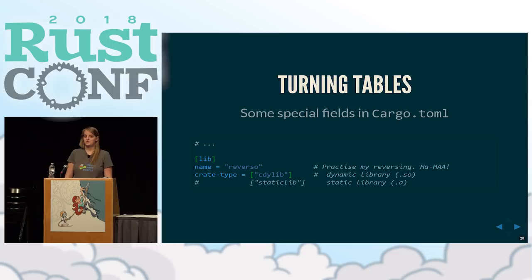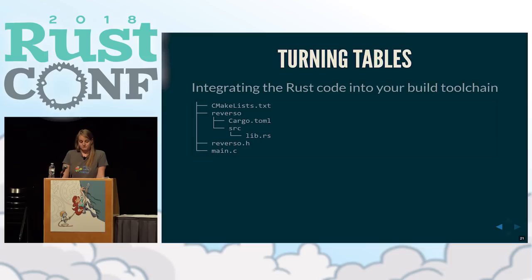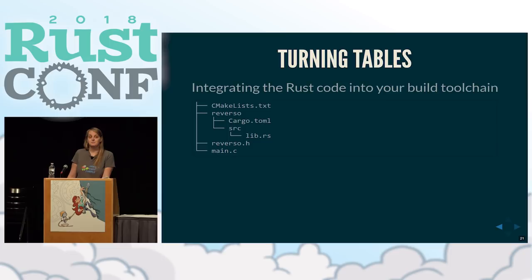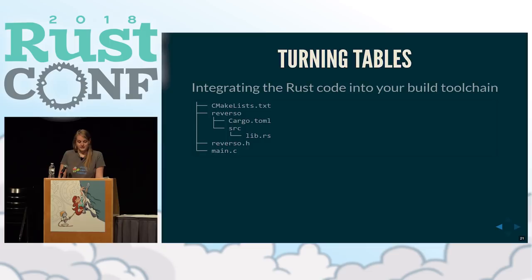At this point you'll need a few more fields in your Cargo.toml. There is the lib section, and you can give it a different name if you want. You also have to provide a crate type. cdylib will generate a shared object file, whereas staticlib will create a statically compiled library, as the name suggests. Something to keep in mind: cargo does not own your project. Cargo will build your Rust code, but it's not in charge of your actual application — that falls to whatever build system you're using with C or C++.